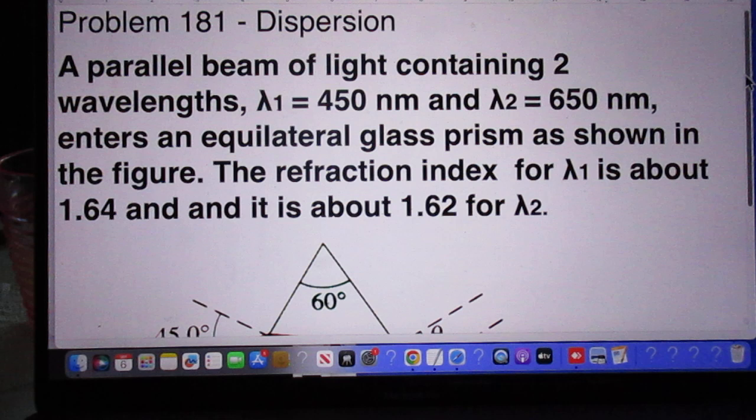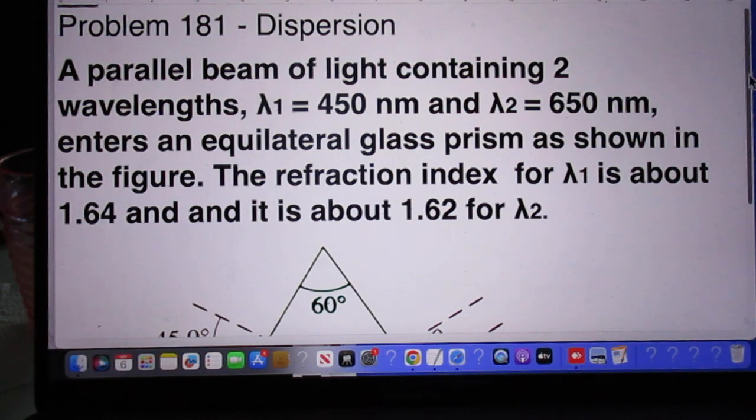A parallel beam of light containing two wavelengths, lambda 1 of 450 nanometers and lambda 2 of 650 nanometers, enters an equilateral glass prism as shown in the figure.